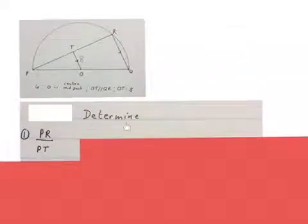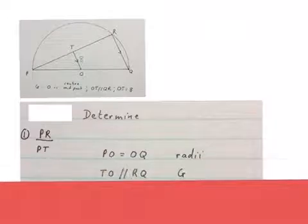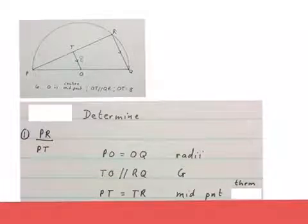The first question asks, determine the ratio of PR over PT. So PR over PT. The first thing we know is that PO is equal to OQ, because of radii. I told you that just now. Then we know that TO is parallel to RQ, that was given in the beginning. So then we know that PT is equal to TR. That one is equal to that one because of the midpoint theorem.